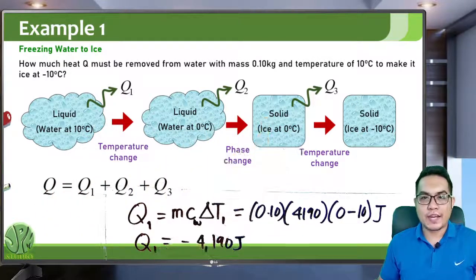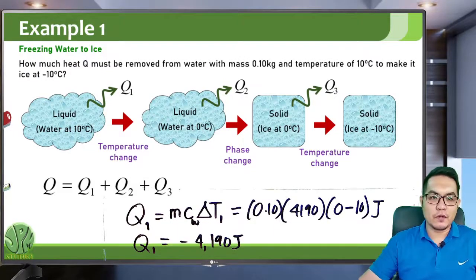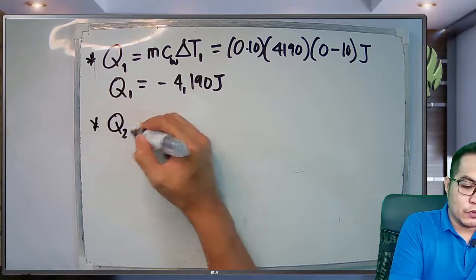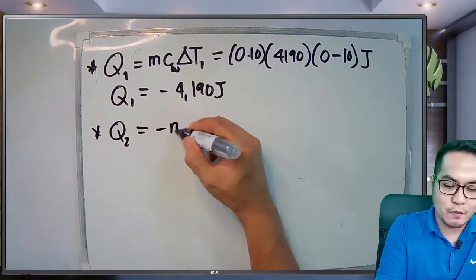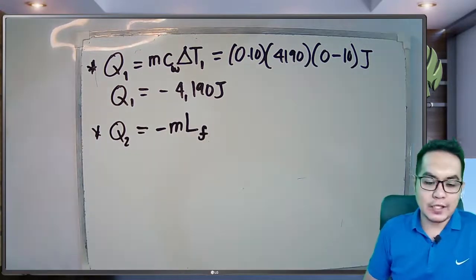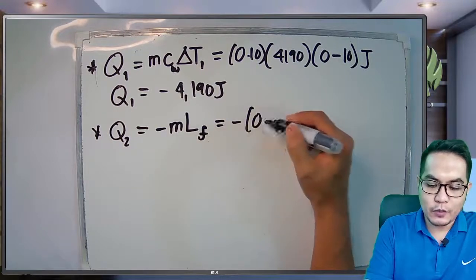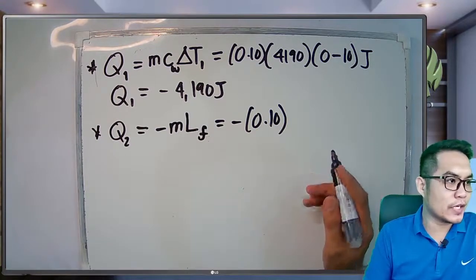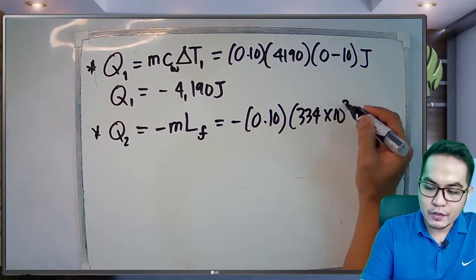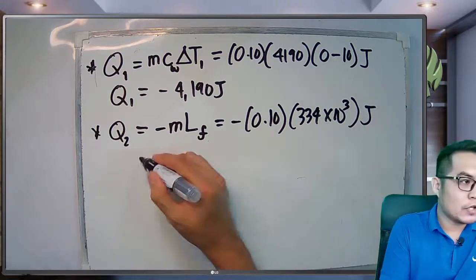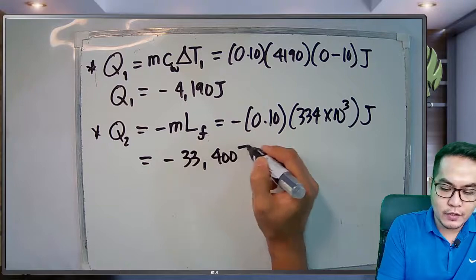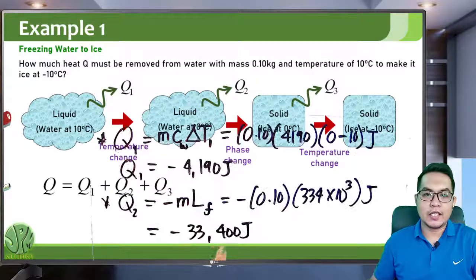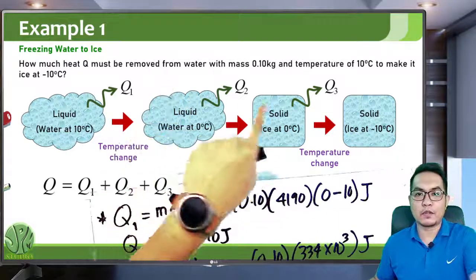Q2 is a phase change from liquid to solid, so we use the phase change formula. Q2 is negative because it is releasing heat: Q2 = −mL_F. With mass 0.10 kg and the latent heat of fusion for water of 334 × 10³ joules per kilogram, you get Q2 = negative 33,400 joules. This is the heat released during the phase change from liquid water to solid ice.